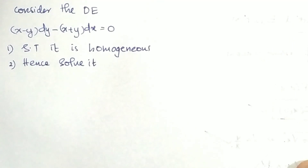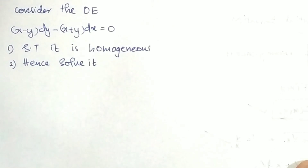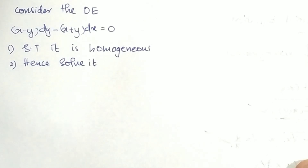Consider the differential equation: (x − y) dy − (x + y) dx = 0. Show that it is homogeneous, and hence solve it.